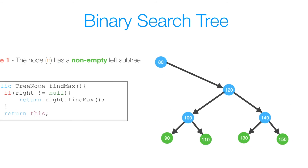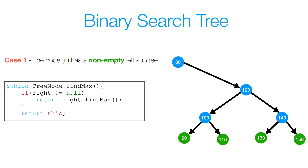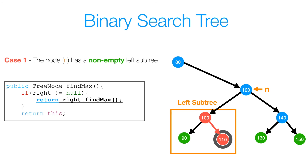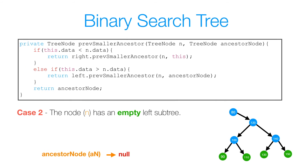For the first case, node n has a non-empty left subtree. If our node n was 120, its left subtree would consist of 90, 100, and 110, and we need to find the maximum value in that left subtree. We can make use of the findMax method defined a couple of videos ago. We check if right is not equal to null — since 100's right is not null, we call findMax on its right subtree, giving us the node with value 110 as we return from the recursive call.